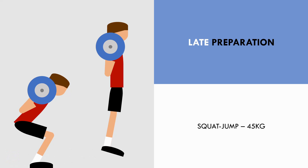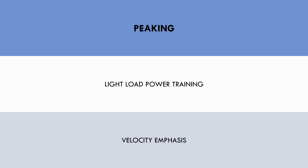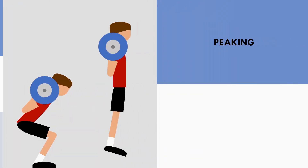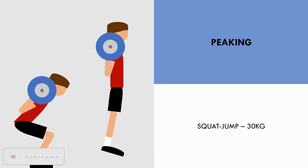When an athlete needs to be in peak condition for their sport, training methods with the most transfer to performance should be used. For power training, this means using light loads. Light loads will allow the fastest movement velocities, meaning that they will have the highest transfer to athletic performance. For example, the squat jump may be used in this period with a load of 30 kilos. This is lighter than the previous two periods, allowing the highest jump height and fastest movement velocities.